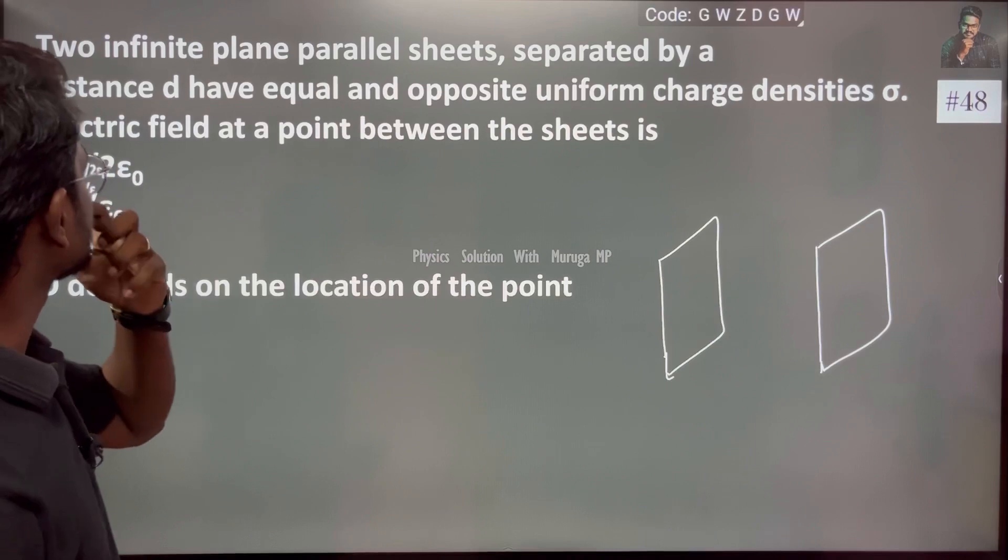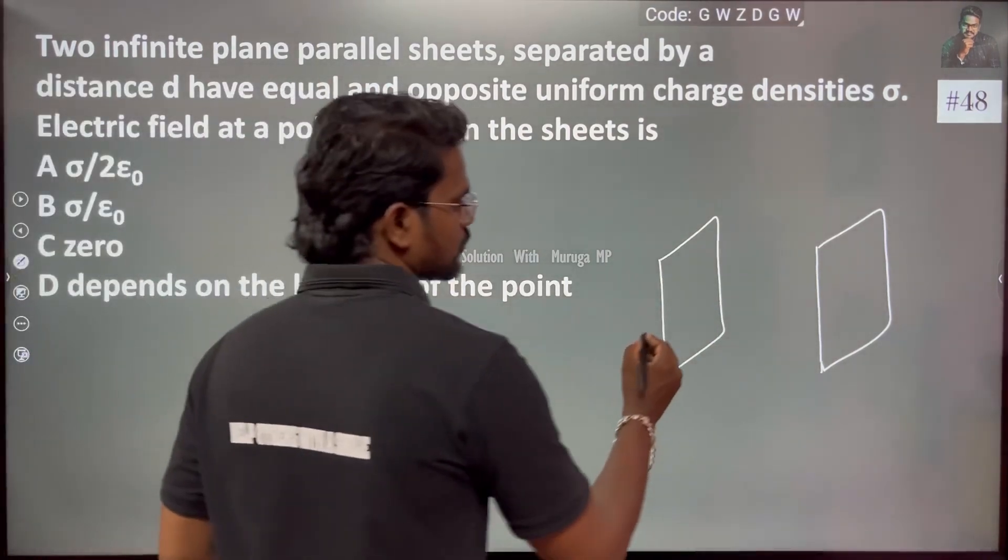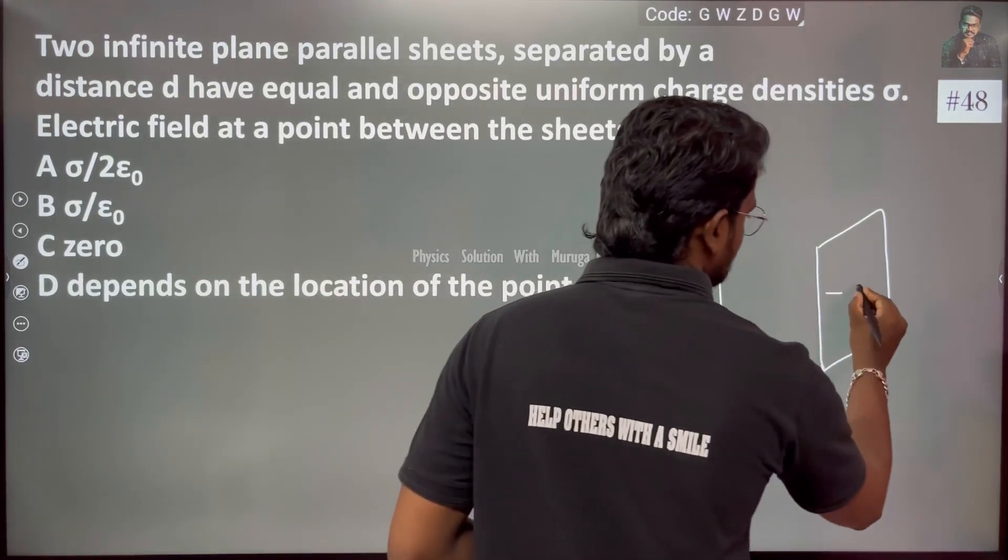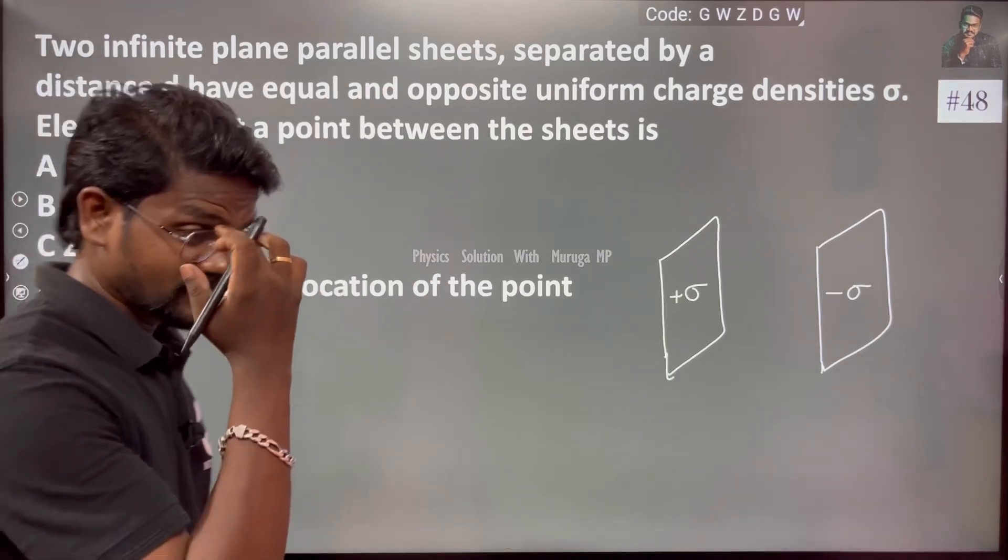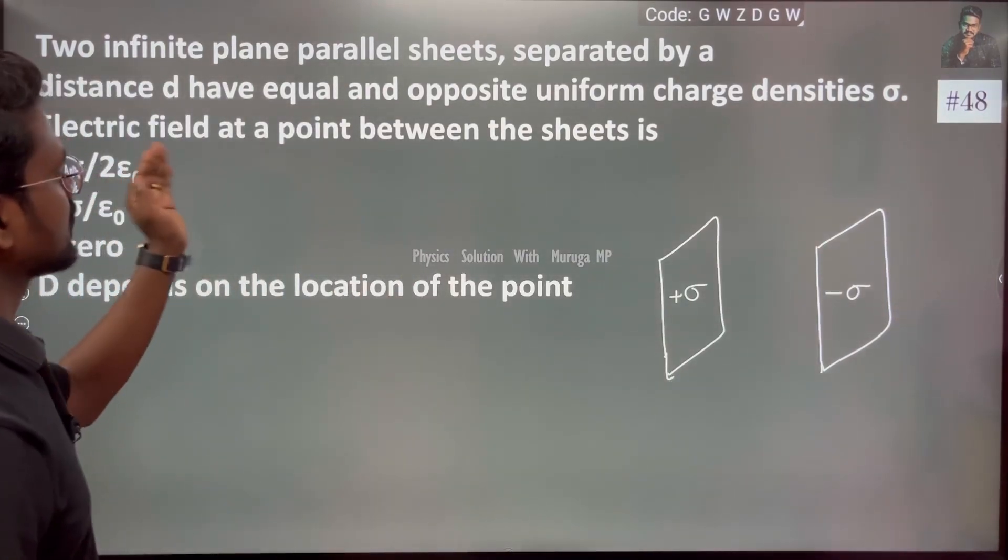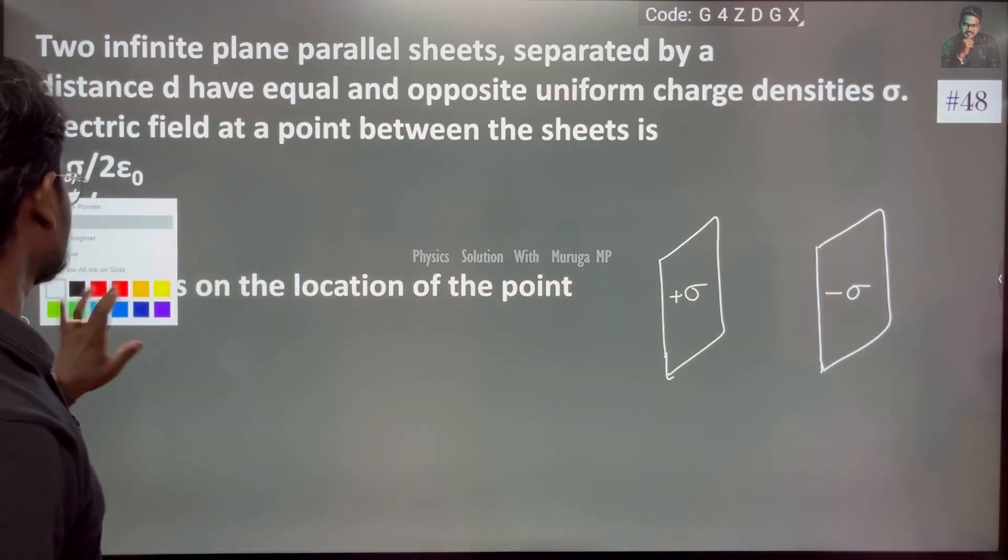Two infinite plane sheets with equal and opposite charges. The charge density, this is plus sigma, this is minus sigma. We discussed applications, so very easy. Electric field at a point between the sheets, the central point.